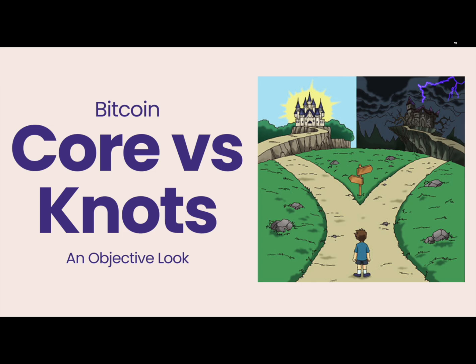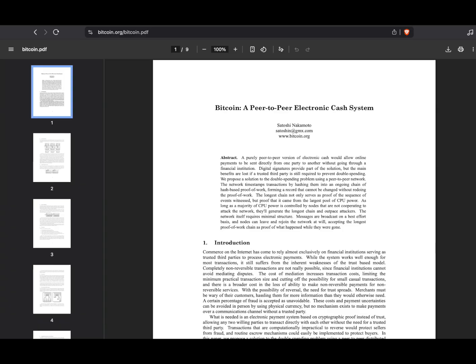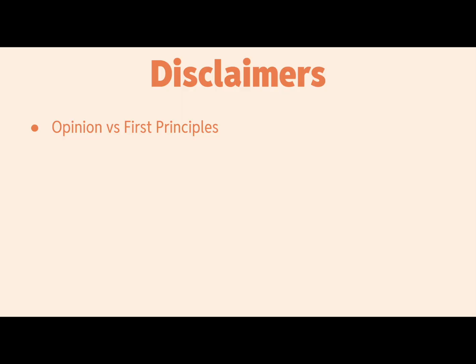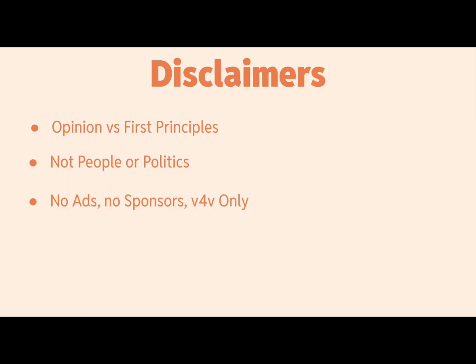Let's have an objective look at the Core versus Knots debate from a first principles perspective, focusing on the most primary source in Bitcoin: the Bitcoin white paper. The goal is to find clarity — do you want to run Core or Knots? I have an opinion but I'll try to focus on first principles. I don't want to focus on people or politics. I have no ads or sponsors — my opinion can't be bought. This is truly just a non-technical pleb perspective trying to find signal through the noise.